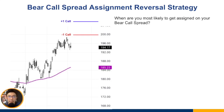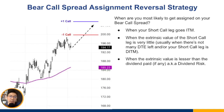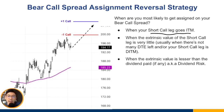On the left-hand side, you can see the chart with the call spread. The question is: when are you most likely to get assigned on your bear call spread? You will only get assigned if your short strike — the short leg of your credit spread — is in the money. If it's out of the money, there's no way it's going to get assigned. You only normally get assigned when your short call leg is in the money, and when the extrinsic value of that short call leg is very little.